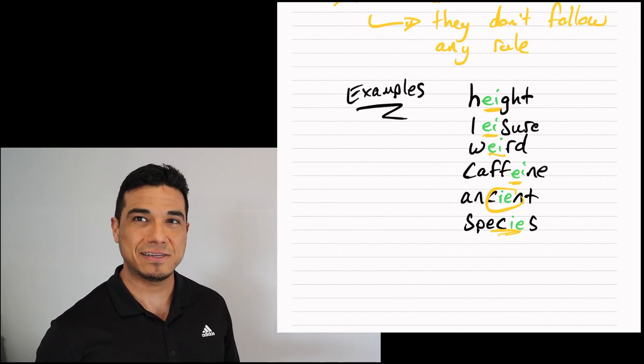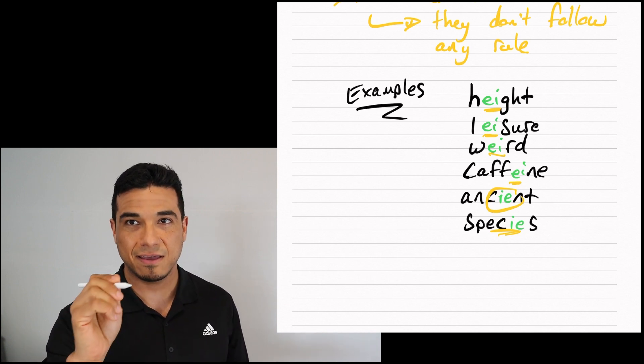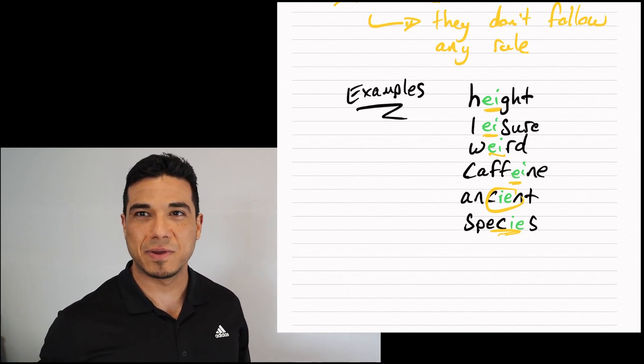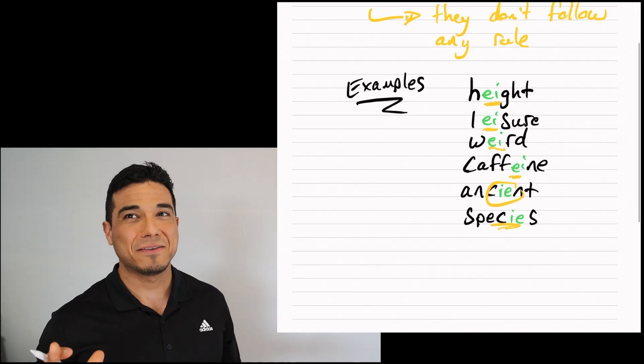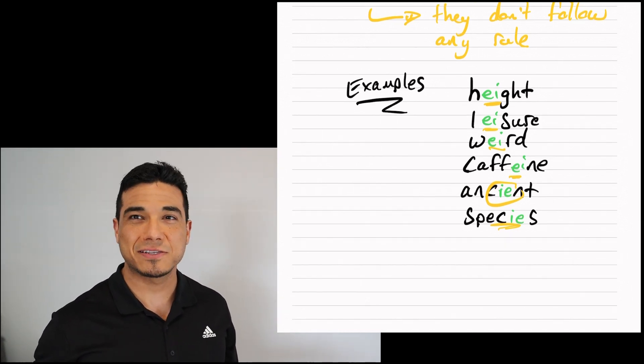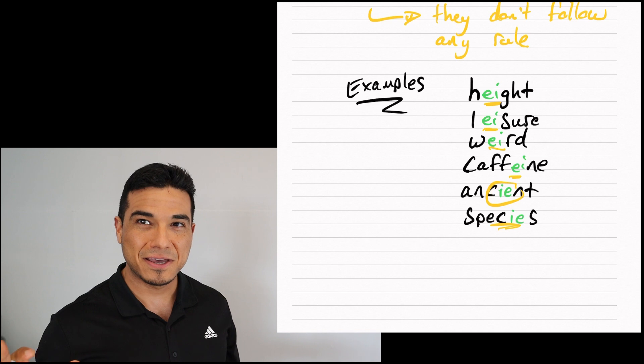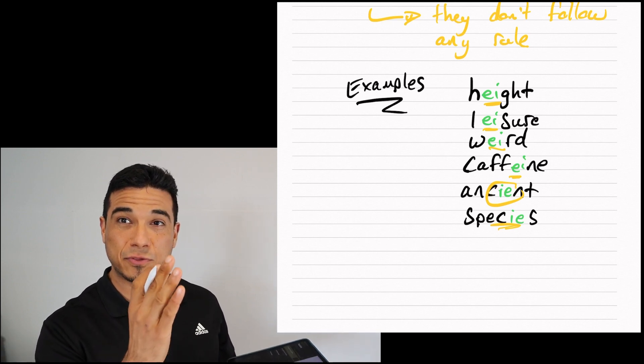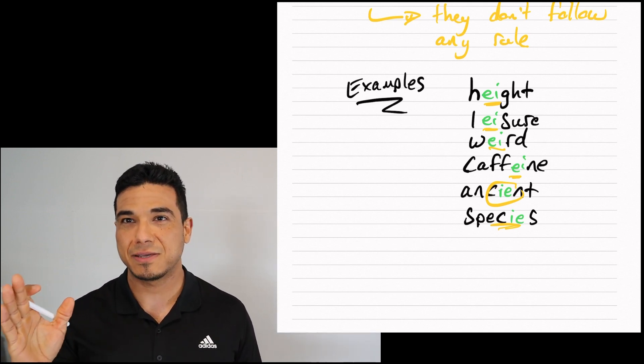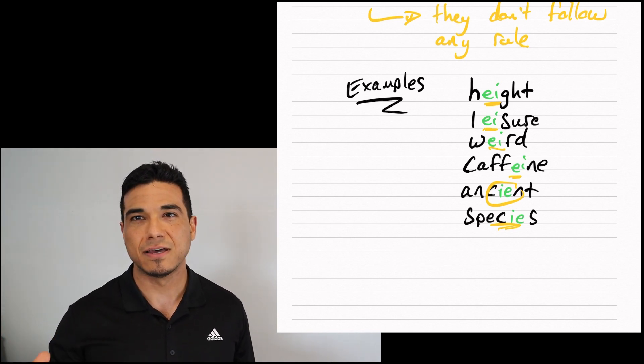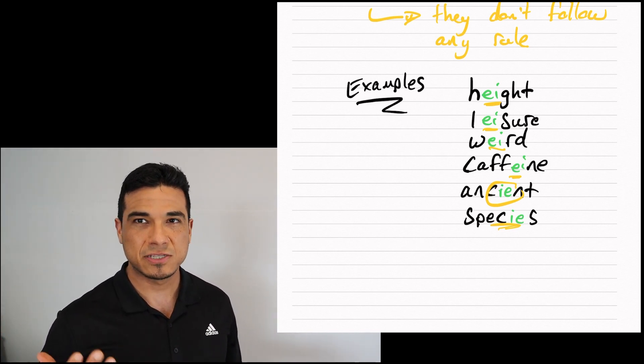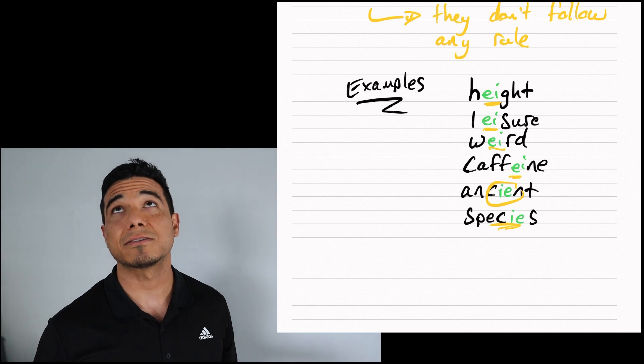And the same thing for species. I've got my C, but then instead of EI, I have IE. It's just one of those things that you're going to have to remember. So again, if you haven't already, I do encourage you to make some kind of flashcards to at least provide you with the rule and also some of the exceptions and perhaps some examples of those exceptions, just to help commit those to memory, especially when you're offline and trying to practice on your own.